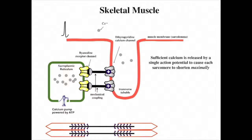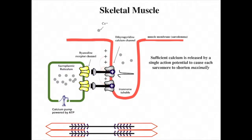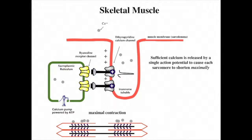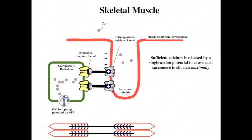Since there is a large depolarization caused by the invasion of an action potential into a transverse tubule, the gates on most, if not all, the dihydropyridine receptors are moved, thereby opening most or all of the calcium channels on the ryanodine receptors. This allows for a sufficiently large influx of calcium into the sarcoplasm so that the sarcomeres shorten maximally. Each action potential is so short in skeletal muscle that the period of sarcomere shortening is too short to fully stretch the elastic components, thereby only causing the muscle to twitch.